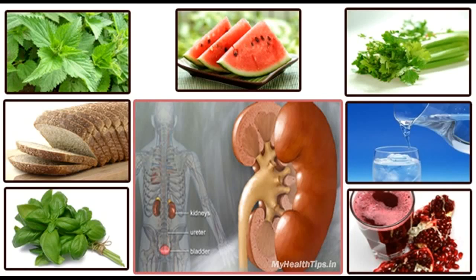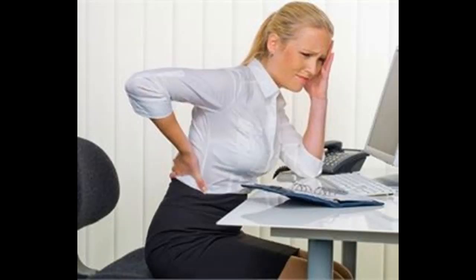Kidney stones may contain various combinations of chemicals. The most common type of stone contains calcium in combination with either oxalate or phosphate. These chemicals are part of a person's normal diet and make up important parts of the body, such as bones and muscles. A less common type of stone is caused by infection in the urinary tract, called struvite or infection stone. Another type, uric acid stones, are a bit less common, and cystine stones are rare.